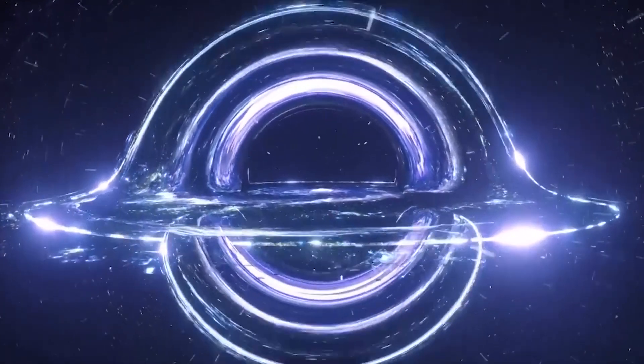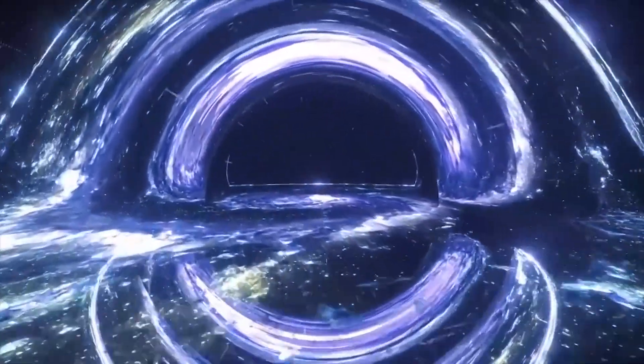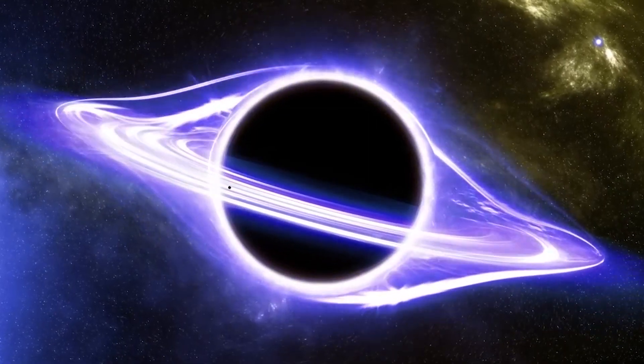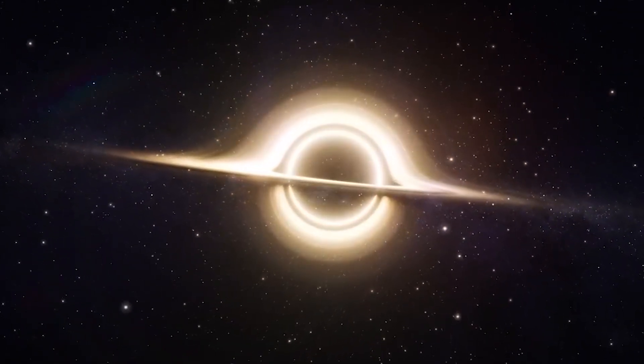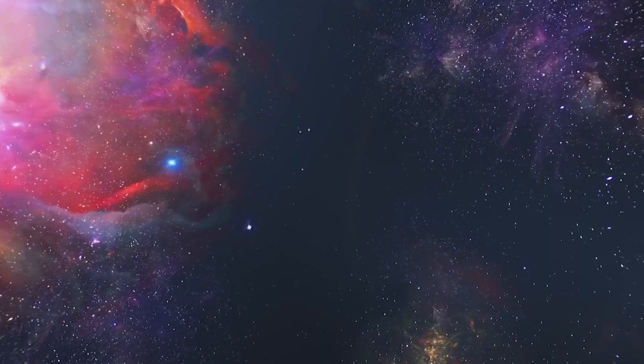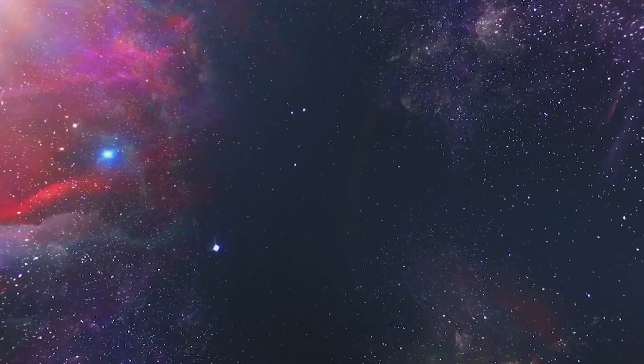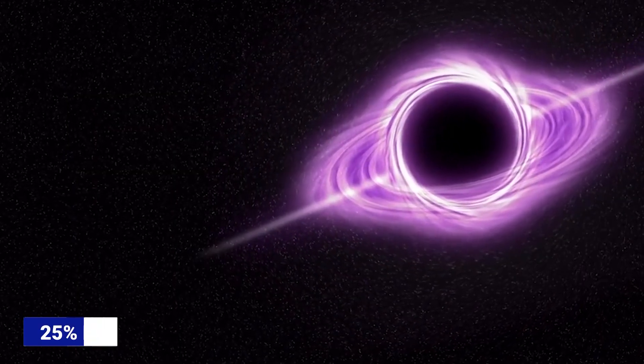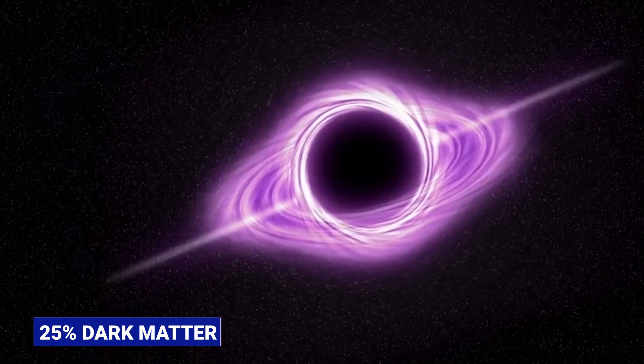And lastly, we can rule out large galaxy-sized black holes on the basis of how many gravitational lenses we see. High concentrations of matter bend light passing near them from objects further away, but we do not see enough lensing events to suggest that such objects make up the required 25% dark matter contribution.